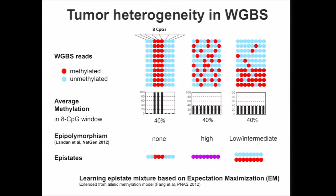We propose to use epistate to summarize the difference between the within-read bisulfite sequencing patterns. For the first two loci, we infer a single epistate with different methylation levels, and in the second locus we have two distinct epistates. We use the expectation maximization method to learn the epistate mixtures, which was successfully used to infer allelic methylation previously.